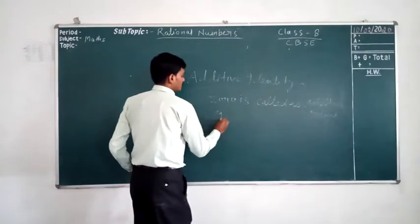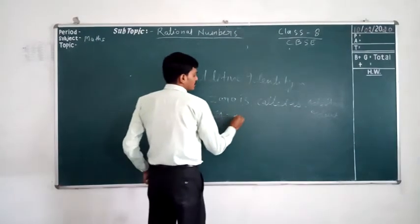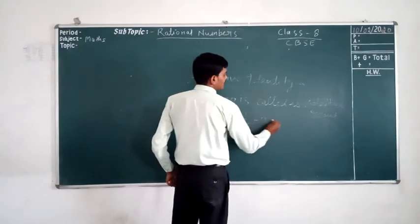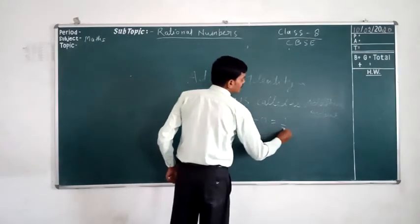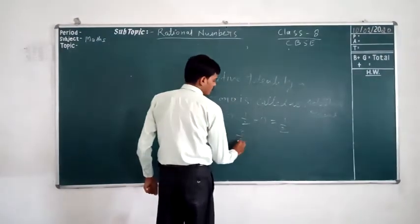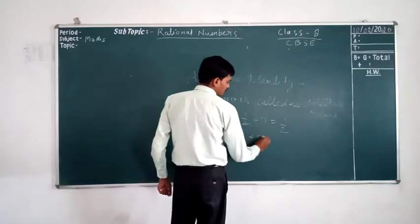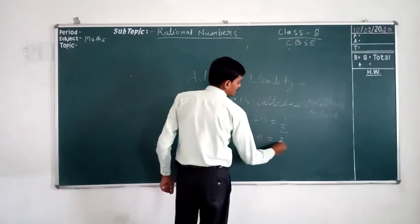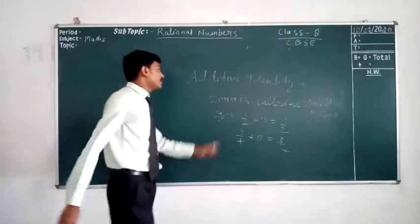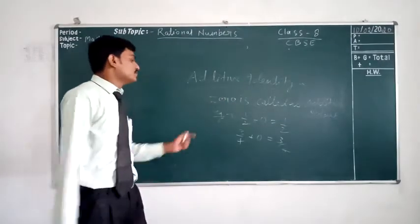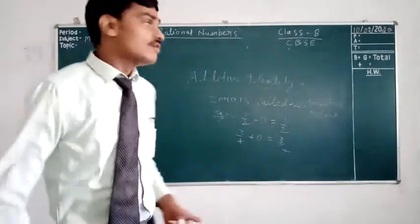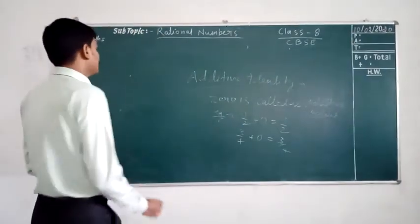For example, 1/2 + 0 = 1/2. We get the same answer. And 3/4 + 0 = 3/4. We get the same answer. So we can say that 0 is known as the additive identity.